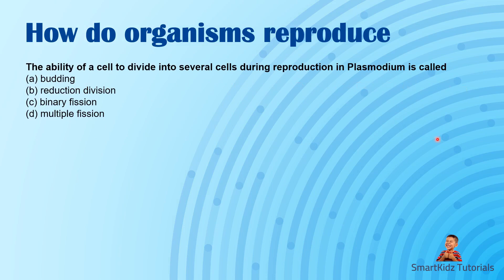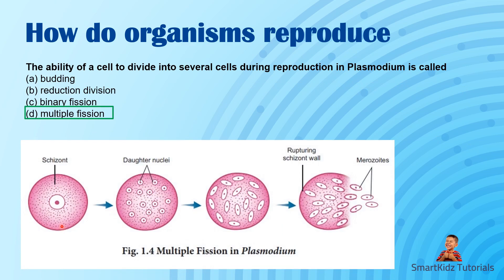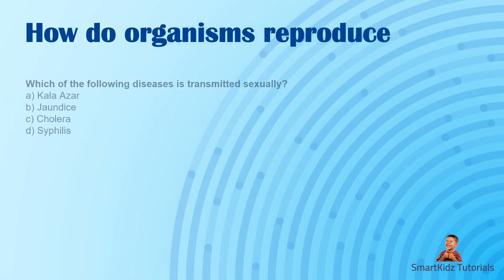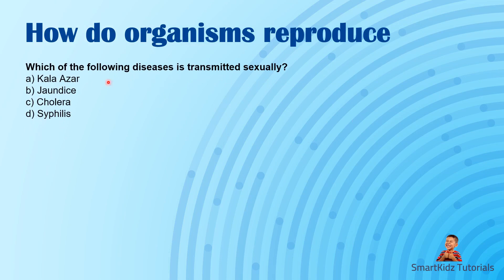The ability of a cell to divide into several cells during reproduction in Plasmodium is called multiple fission. You can see the cell will divide multiple times during reproduction.